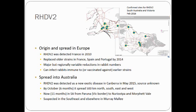We suspect that RHDV2 will be prevalent in most South Australian rabbit populations within 12 months and that it will cause significant declines. Whether RHDV2 and the Korean K5 strain between them cause a brief blip or more prolonged suppression remains to be seen.